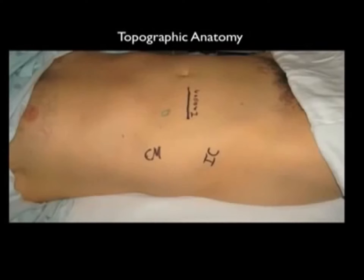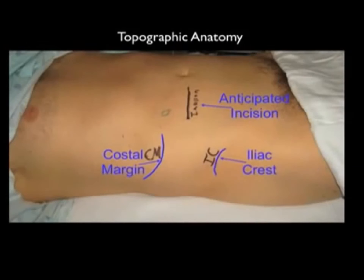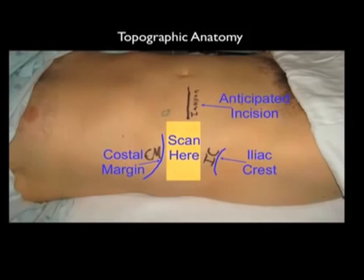This image comes from a patient having a right colectomy. The plan was to perform a single injection right-sided TAP block. The costal margin and the iliac crest are marked. The yellow box indicates the scan area where the TAP should be identified.